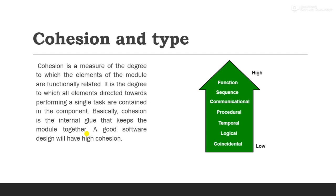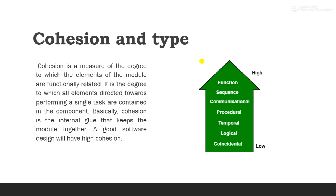Cohesion is the measure of the degree to which the elements of each module are functionally related. We have a total of seven types of cohesion: functional, sequential, communicational, procedural, temporal, logical, and coincidental. This is the hierarchy among all these types — functional cohesion is the highest, and coincidental cohesion is the lowest or worst. In our upcoming videos, we are going to learn cohesion and its types in more detail.